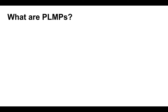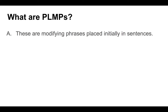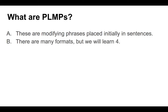Let's flesh out what we actually mean by the acronym PLMPs. These are modifying phrases, and as you can guess by the terminology of preloading, they get placed initially in our sentences — they always come at the beginning and are used to link our ideas together. There are many different ways to use this type of connective writing, but we're going to focus on four of them: PLMP A, B, C, and D. We'll learn the formulas for these little linking phrases.